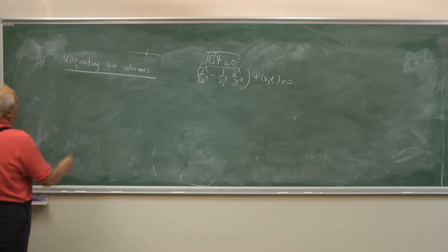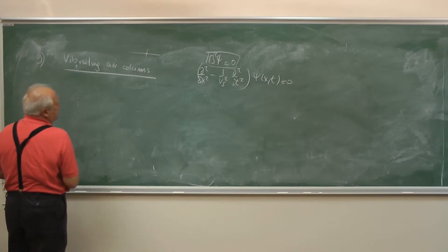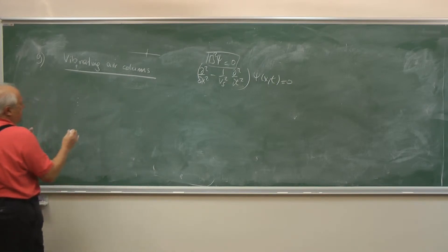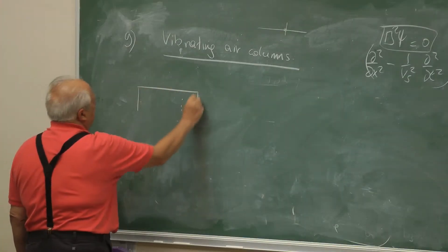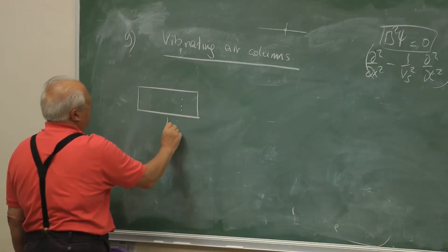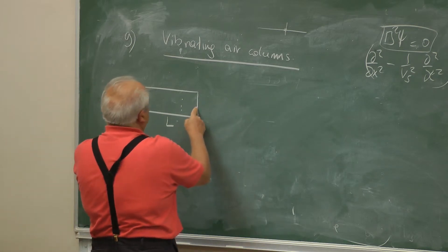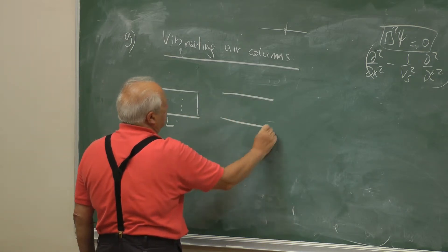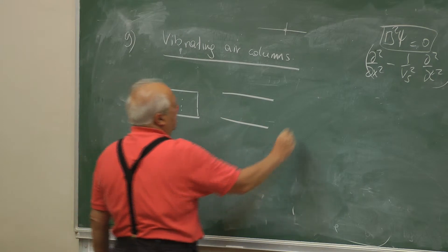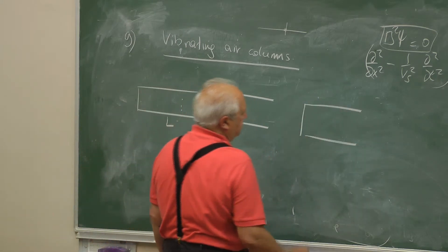Musical instruments are not infinitely long pipes, but they are contained boxes. We can think of three types of boxes: both ends closed, both ends open, and one end open and one end closed.